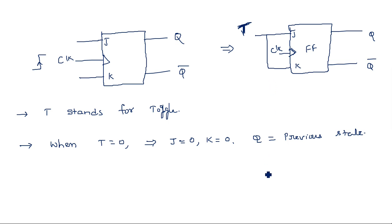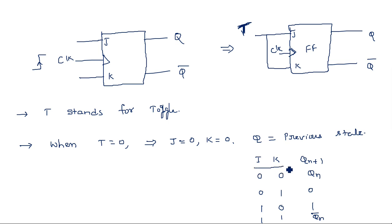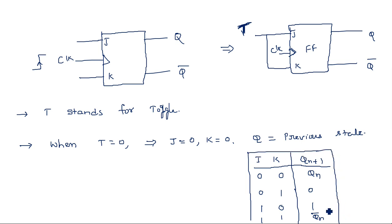From the JK flip-flop truth table with inputs 00, 01, 10, 11: when J=K=0 the output is previous state Qn; when J=0, K=1 the output is 0; when J=1, K=1 the output is complement of previous state. So when T=0, that means J=0 and K=0, and the next state Qn+1 is the same as the previous state Qn.